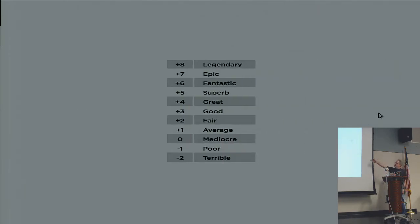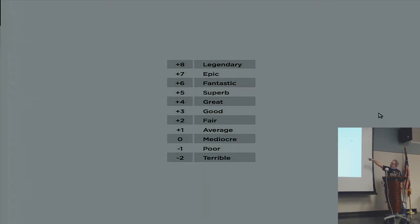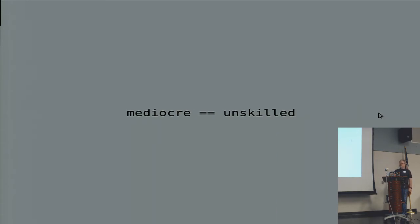What I mean by mediocre: in the game Fate and Fudge, there is a scale — a ladder — and where you are at unskilled is called mediocre. That is someone who is unskilled. When I talk about mediocre, I mean someone who is unskilled. You're not necessarily bad at it, not necessarily horrible at it. You're also not great at it yet — you just have a ways to go.